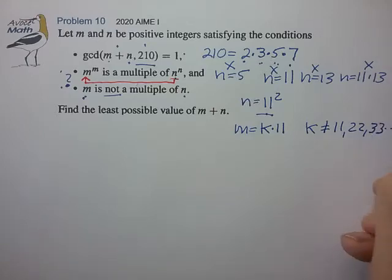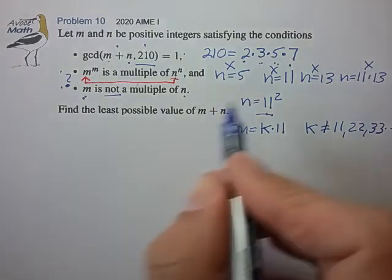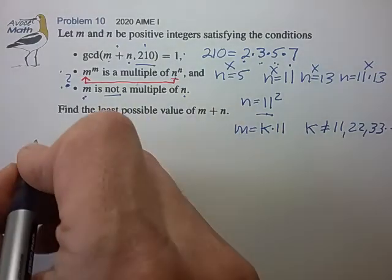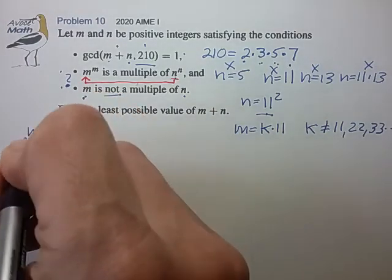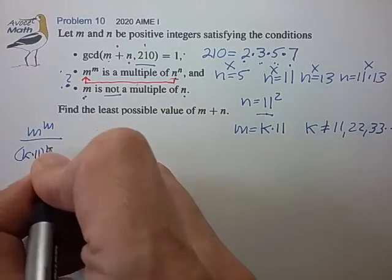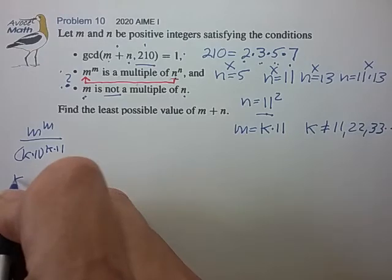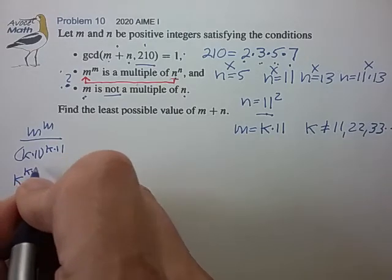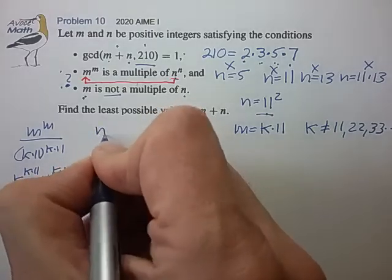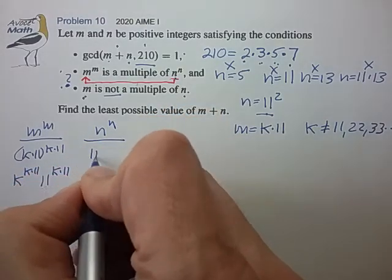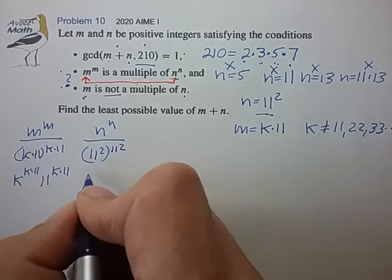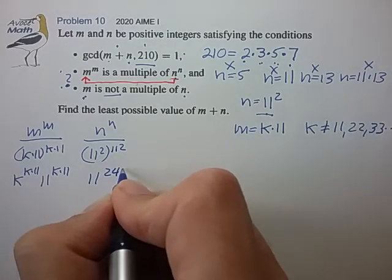So let's let m equal k times 11, such that k is not a multiple of 11. So we have m to the m, being k times 11 to the k times 11, so that's k to the k times 11, 11 to the k times 11, and the number n to the n, which is 11 squared to 11 squared, so that's 11 to the 242.